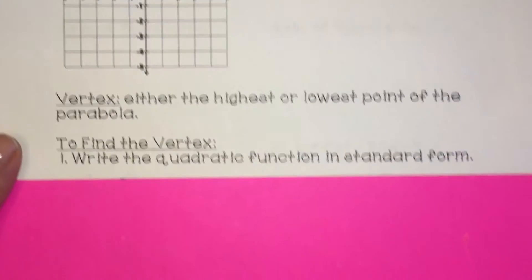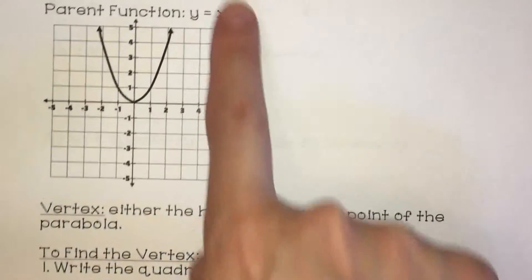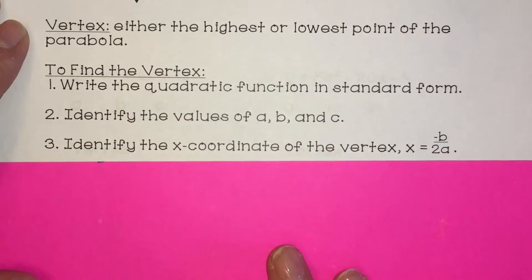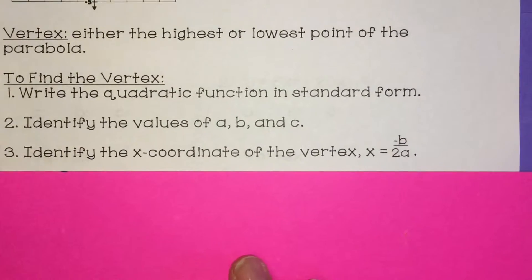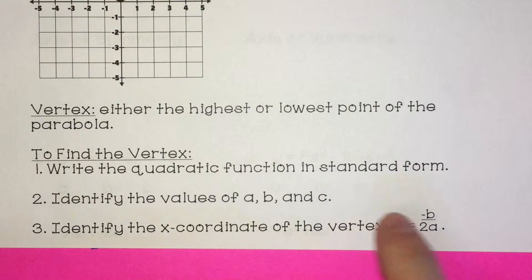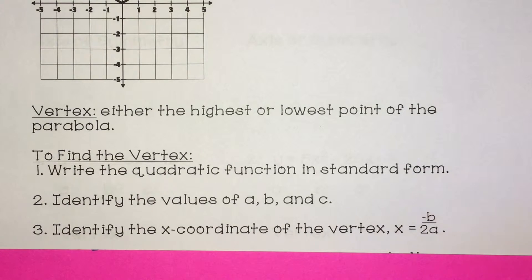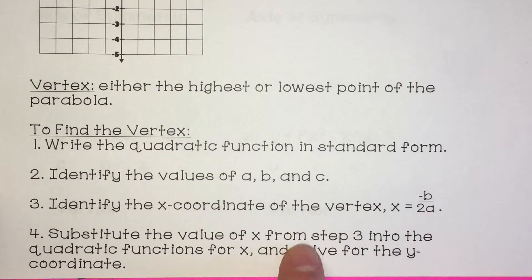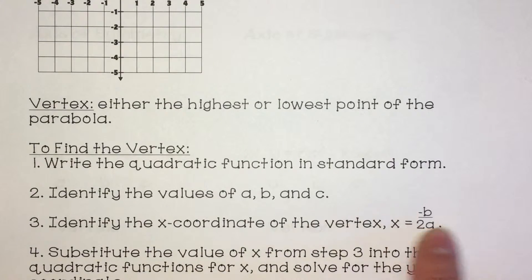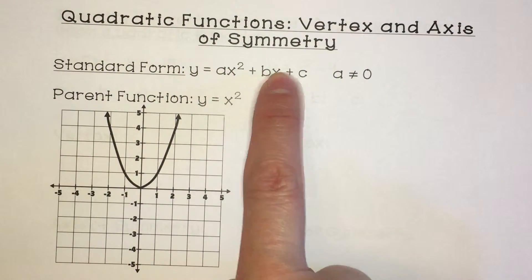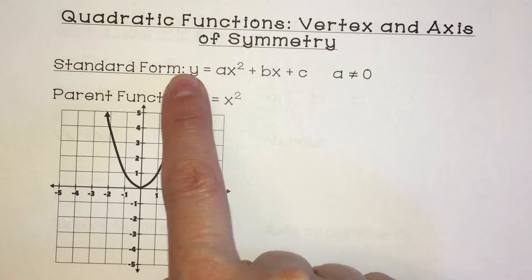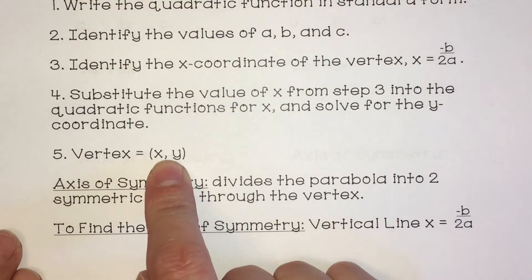To find the vertex, write the quadratic function in standard form — if it's not in this form, rewrite it. Identify the values of a, b, and c. Then identify the x-coordinate of the vertex: that's negative b over 2 times a, which gives you the x-coordinate. Then substitute that x value into the quadratic function and solve for the y-coordinate. So your vertex is a point: (x, y).